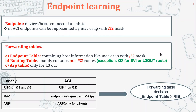The first topic is: what is an endpoint? An endpoint is a device or host that is connected to our fabric. In ACI, endpoints can be represented by a MAC address or an IP address with a /32 mask. Whenever a leaf switch learns about a host or device connected to it, it learns the IP address as a /32 mask, irrespective of the original mask held by that particular host.